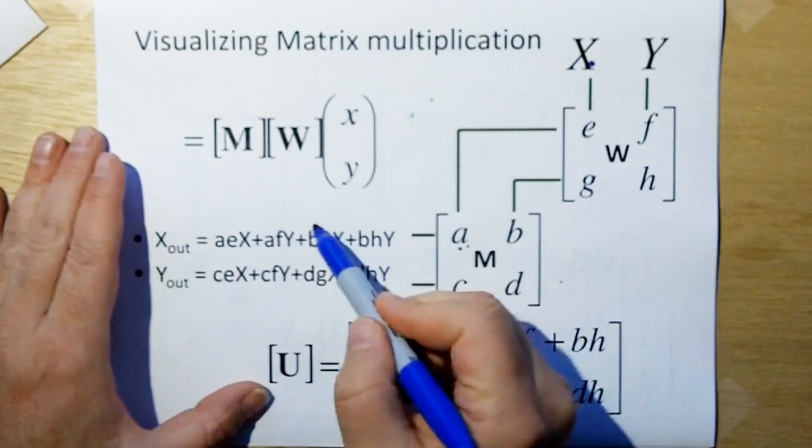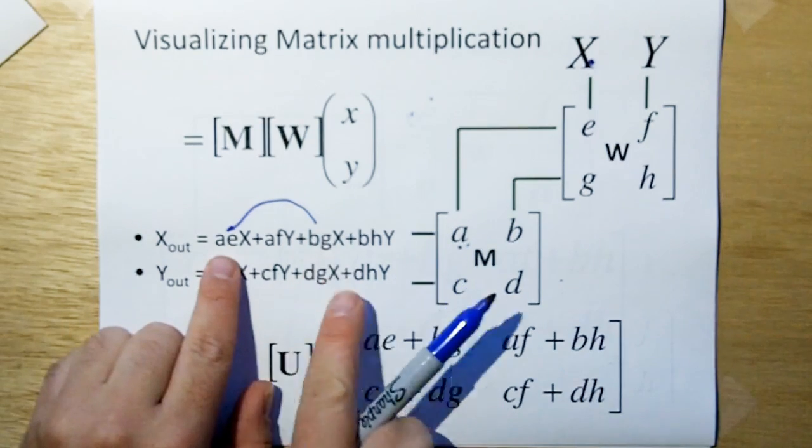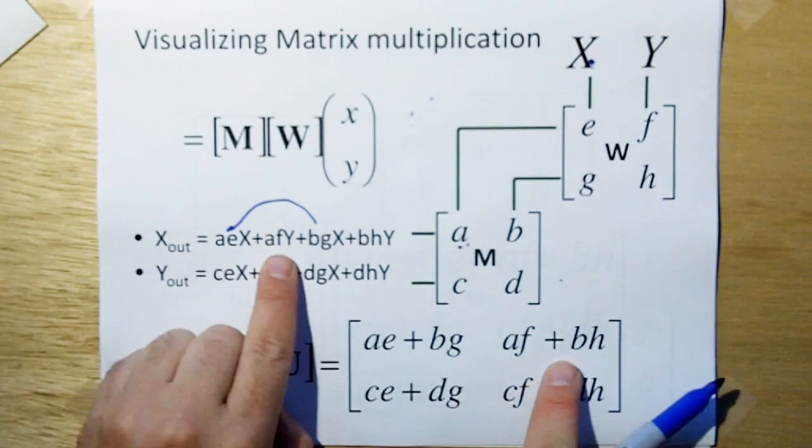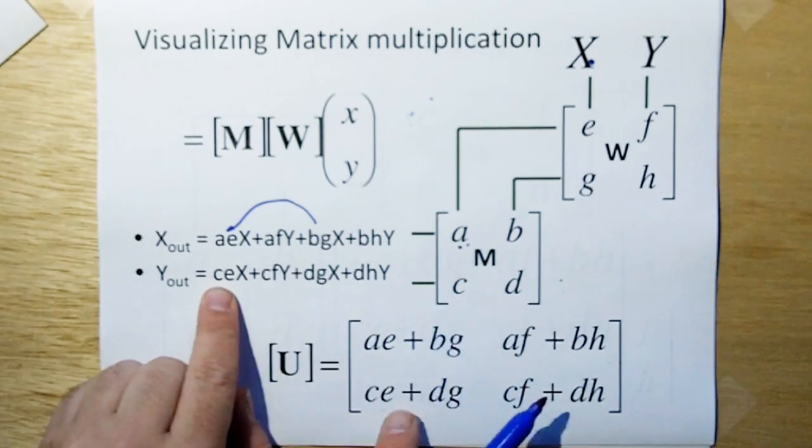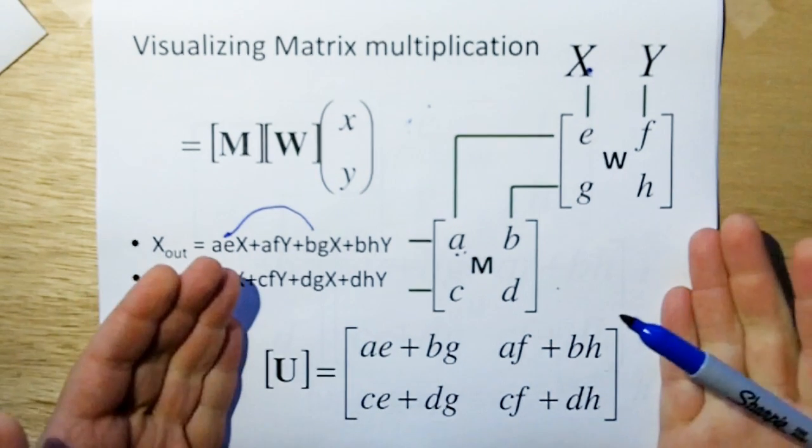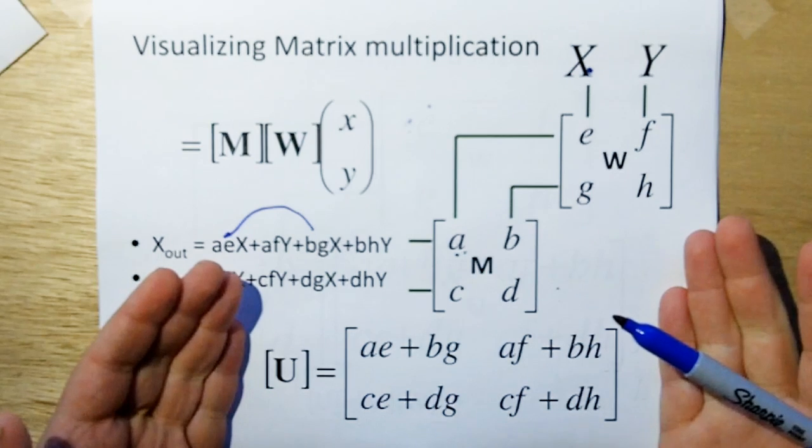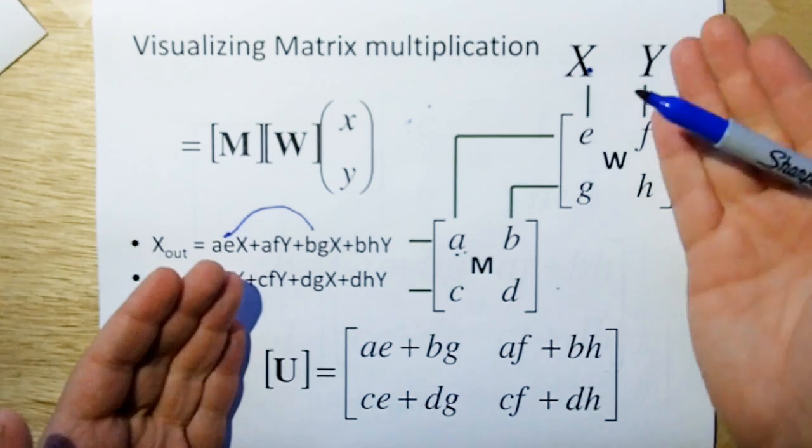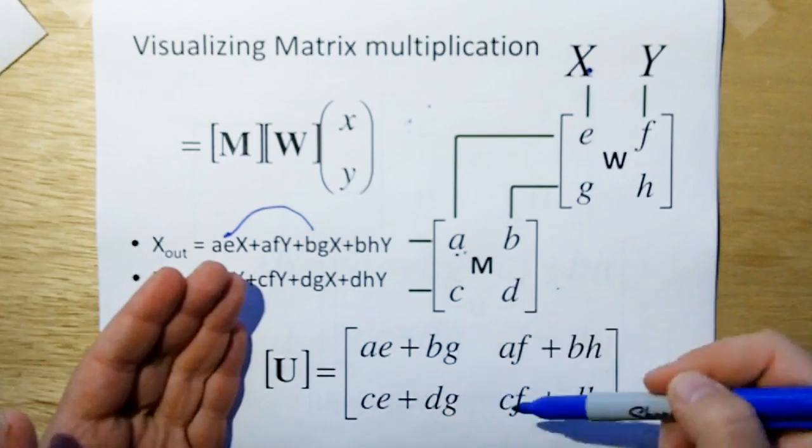Then we collect these like X components. We get AE, BG, AF, BH, CE, DG, and CF, DH here. And that's how we can do, that's basically all you're doing when you do matrix multiplication. You're just combining this two-step process into one.